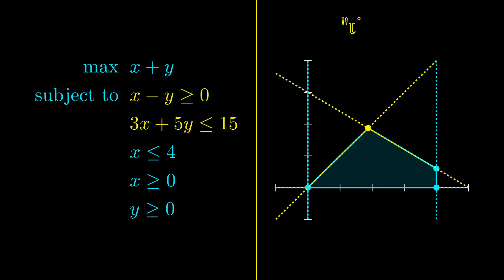Notice that at least two constraints are satisfied at equality at each vertex. There is a special terminology for this. We say these constraints are tight at these vertices.